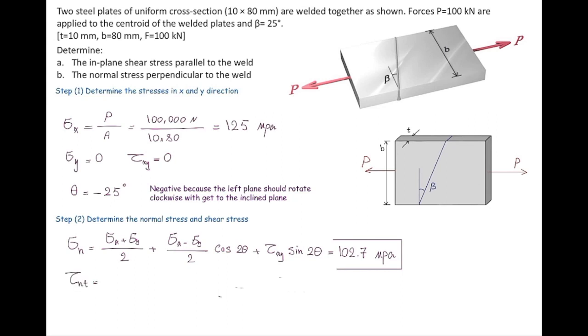In a similar way shear stress is going to be negative sigma x minus sigma y over 2 sine of 2 theta plus tau xy cosine of 2 theta and that would result in 47.9 megapascals.